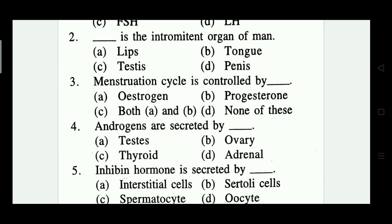Number three: menstruation cycle is controlled by — estrogen, progesterone, both A and B, none of these. Which is correct? Question number three — it is both A and B: estrogen and progesterone.